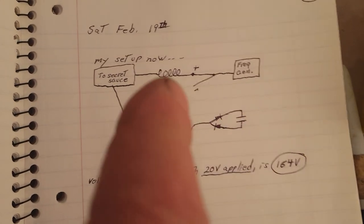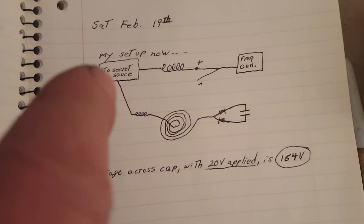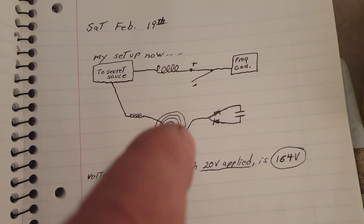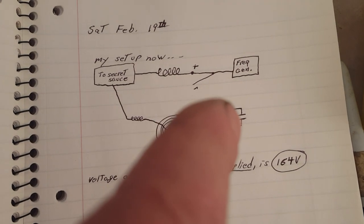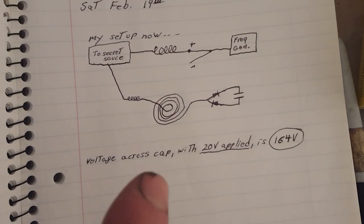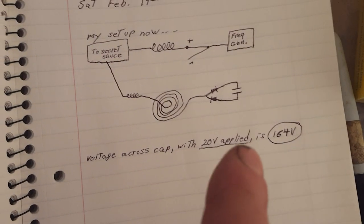Frequency generator, my primary coil, my secret sauce. One wire to a small coil to a pancake coil to two diodes to a capacitor.